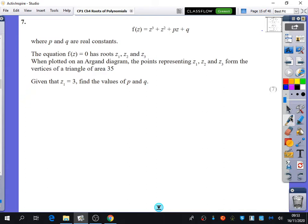It says p and q are real constants. And it says it's got the roots z1, z2, and z3. When plotted on an Argand diagram, the points representing z1, z2, and z3 form the vertices of a triangle of area 35. And it says given that z1 equals 3, find the values of p and q.